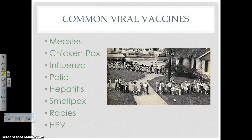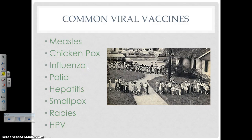Here are some viruses that we have vaccines for — list some of these under number 18 on your notes organizer. We have vaccines for measles, chickenpox, the flu (which we get every year because that virus mutates easily), polio, hepatitis, smallpox, rabies, and HPV. Here's a picture of children waiting to get the polio vaccine when it first came out. All right, that's it for today — I hope you guys are having a great day.